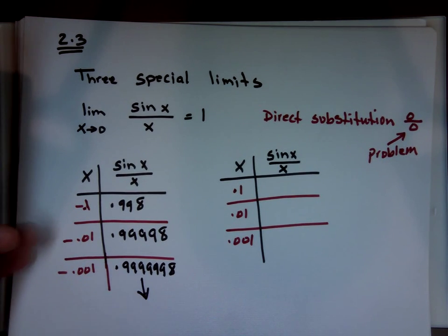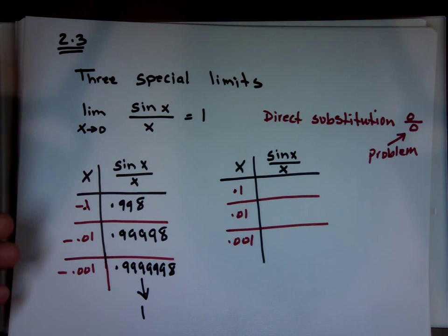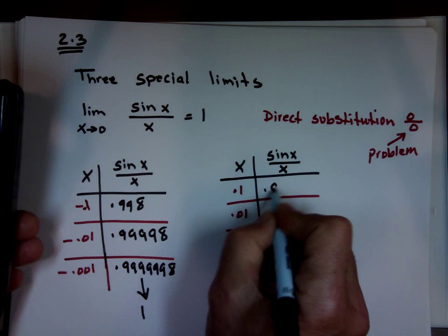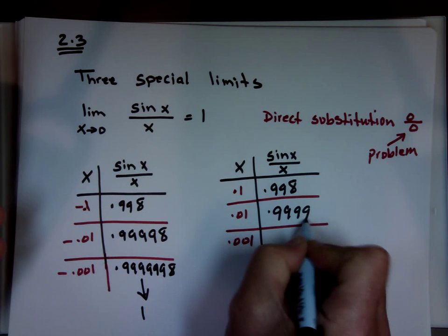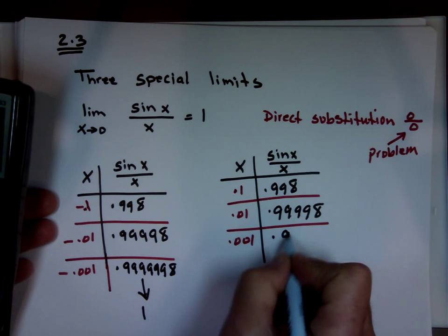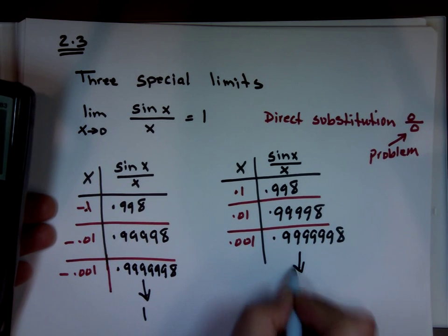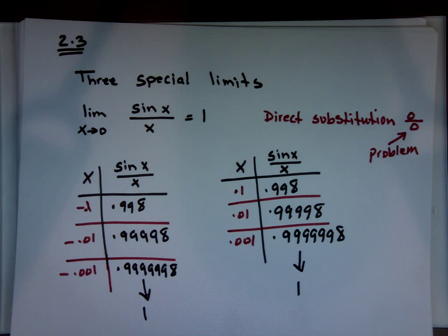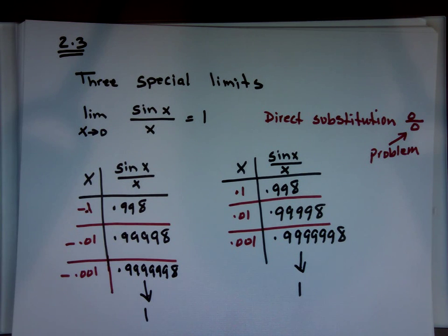Where is that number going? Towards one. From the right side, sine of 0.1 divided by 0.1 is about 0.998, then 0.99998, then 0.9999998 — that's also going to one. So the limit of sine of x over x as x approaches zero is always one. That's one of the three special cases.